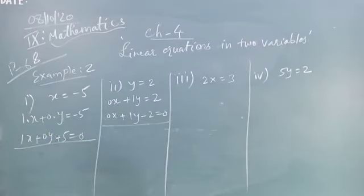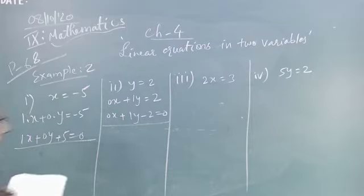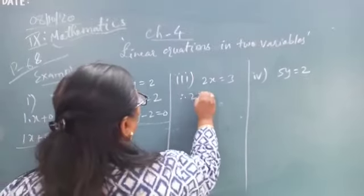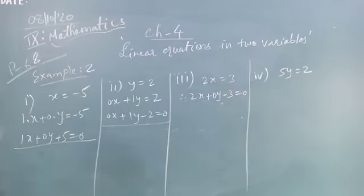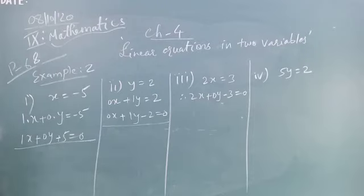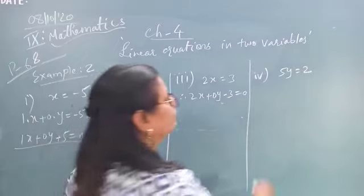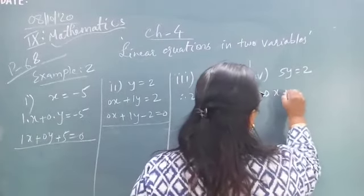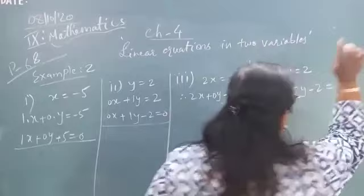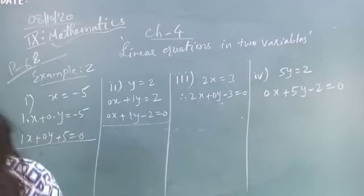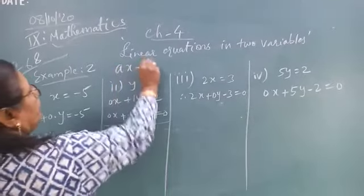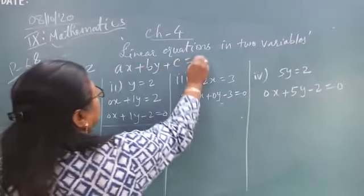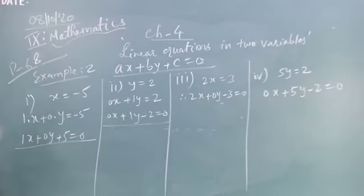The third one: 2X is equal to 3. Therefore 2X plus 0Y minus 3 is equal to 0. This is the standard form of equation 3. Now number 4 is given: 5Y is equal to 2. So 0X plus 5Y minus 2 is equal to 0. Every time you can write in standard form AX plus BY plus C is equal to 0.